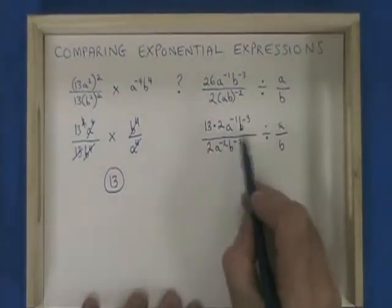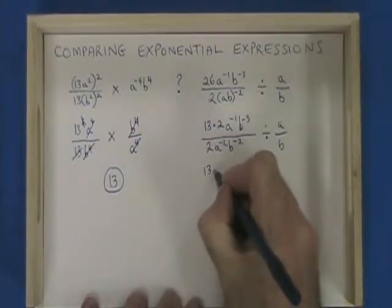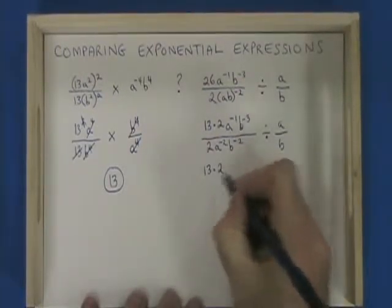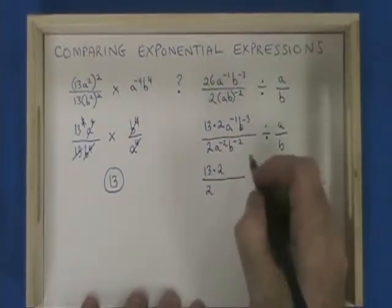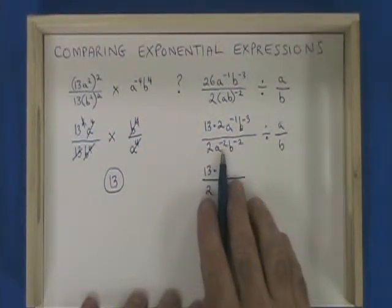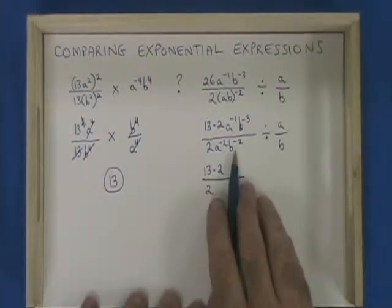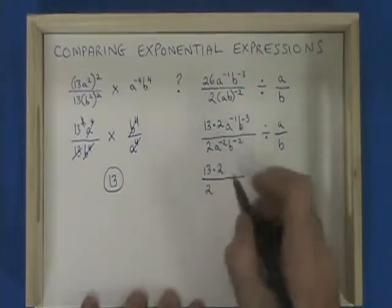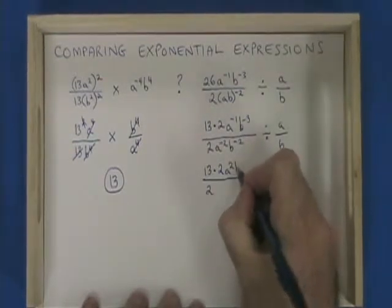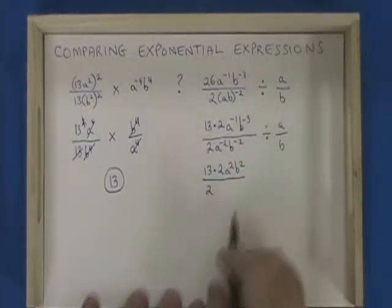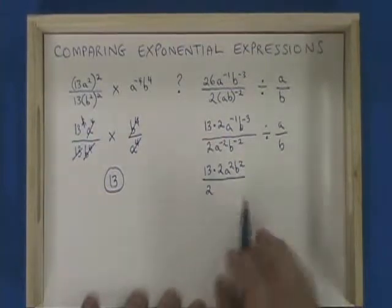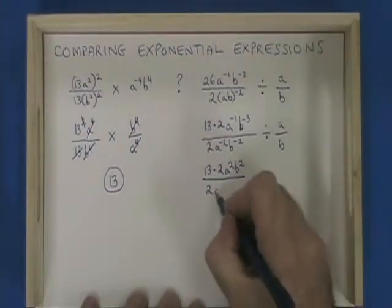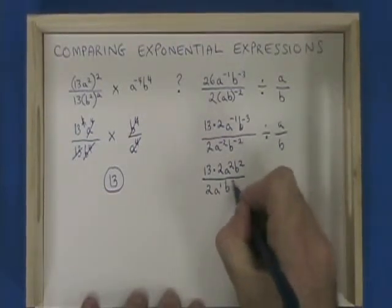Then I'm going to get rid of these negative exponents. So I'm going to have 13 times 2 on the top, 2 on the bottom. The a to the negative 2 and b to the negative 2 on the bottom move to the top, and I have a squared, b squared. The a to the negative 1 and b to the negative 3 move to the bottom, where I have a to the 1, b to the 3.